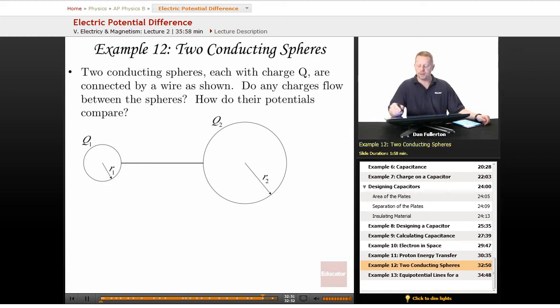All right, let's take a look at a problem with two conducting spheres. These two conducting spheres, each with charge Q, are connected by a wire as shown. Do any charges flow between the spheres, and how do their potentials compare?